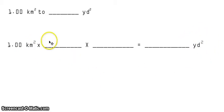As you can see, we now have two blanks, meaning we need at least two equivalent statements for us to solve this problem. And these equivalent statements are 1 kilometer is equal to 1,000 meters and 1 meter is equal to 1.09361 yards.